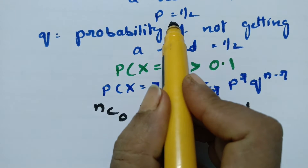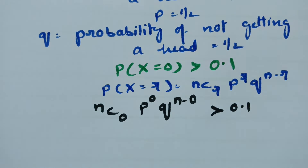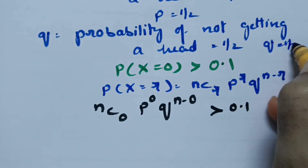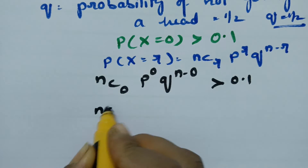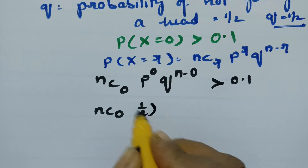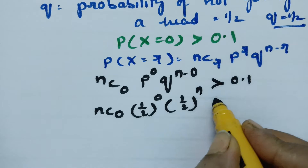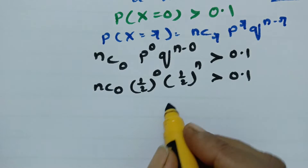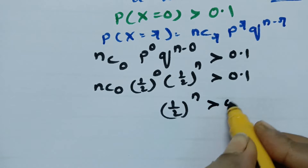P is equal to half and Q is equal to half. Substituting, this becomes NC0 × (1/2)^0 × (1/2)^n greater than 0.1. Since NC0 is 1 and (1/2)^0 is 1, what remains is (1/2)^n greater than 0.1.